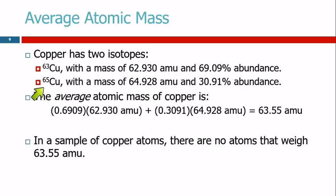The other isotope is copper-65, its mass is 64.928 atomic mass units. The rest of it is that, 30.91%.